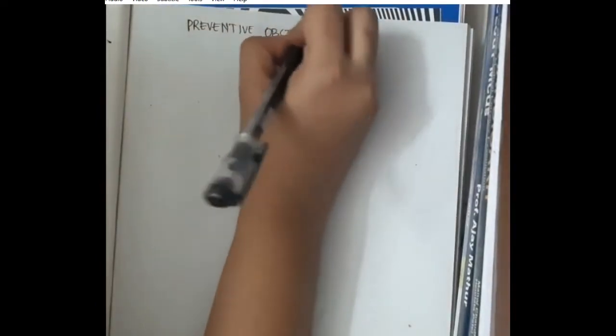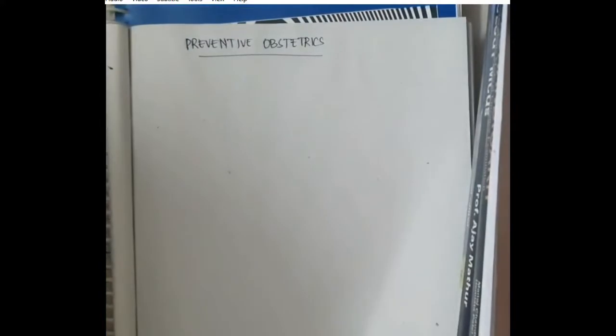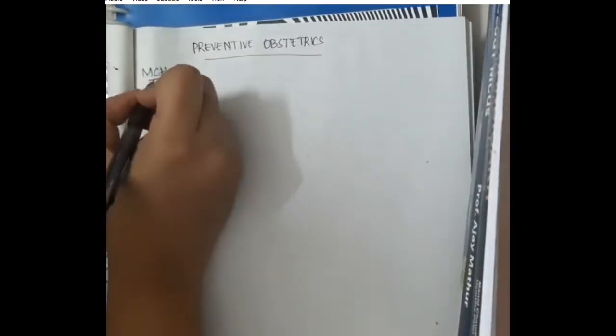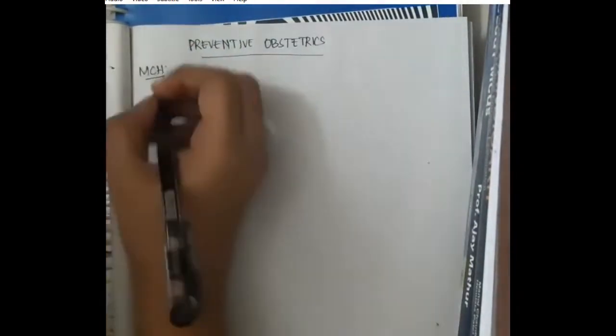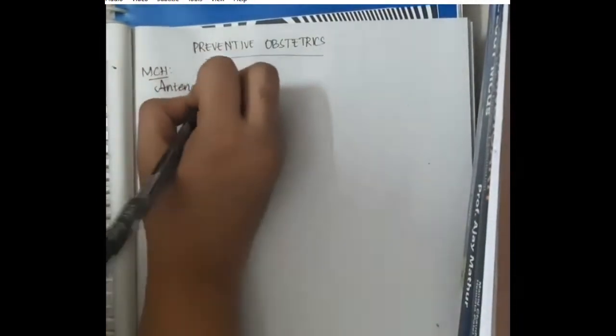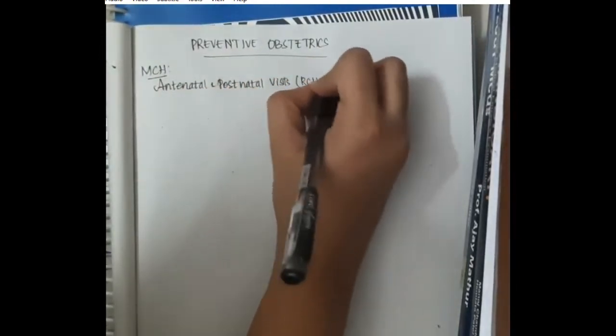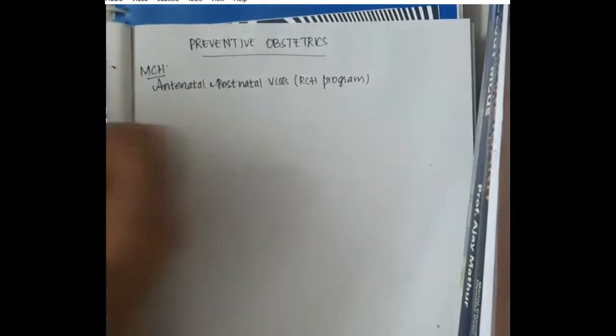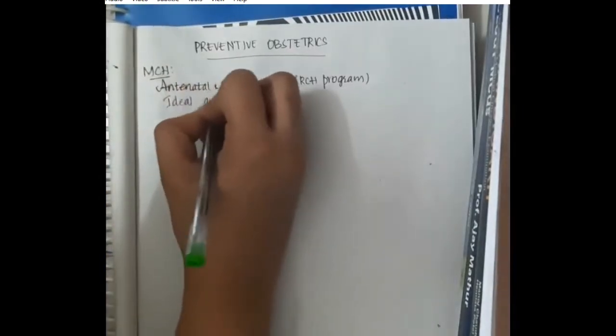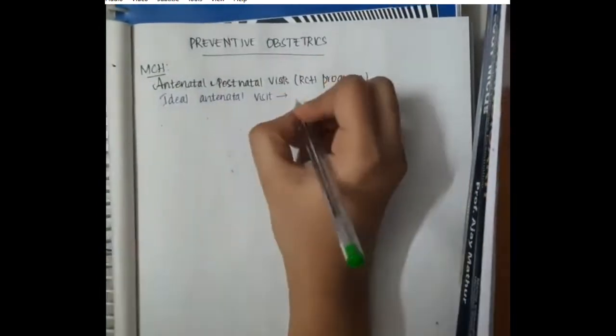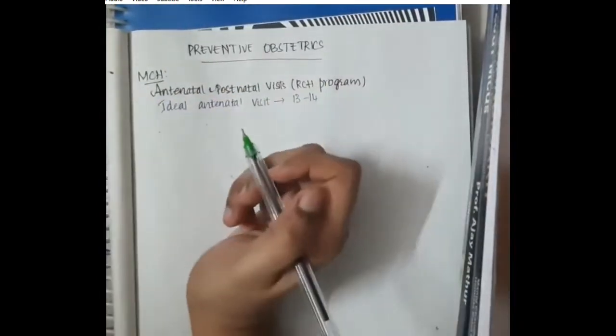Hello friends, let us now learn some important points about preventive obstetrics. First, maternal and child health. In maternal and child health, we have an important thing that is antenatal and postnatal visits. According to the reproductive and child health program, ideal antenatal visits should be around 13 to 14.